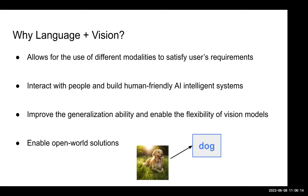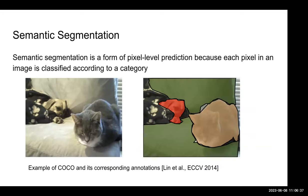For example, our existing model can segment a dog correctly. However, this should not only be recognized as a dog — it should also be recognized as a pet, even though 'pet' has never been seen during training. To tackle this problem, we start our experiments from semantic segmentation. Semantic segmentation is a form of pixel-level prediction because each pixel in an image is classified according to a category. On the left side we show an example image from the COCO dataset, and on the right side we show the segmentation annotations — the dog annotated as red and the cat as orange.